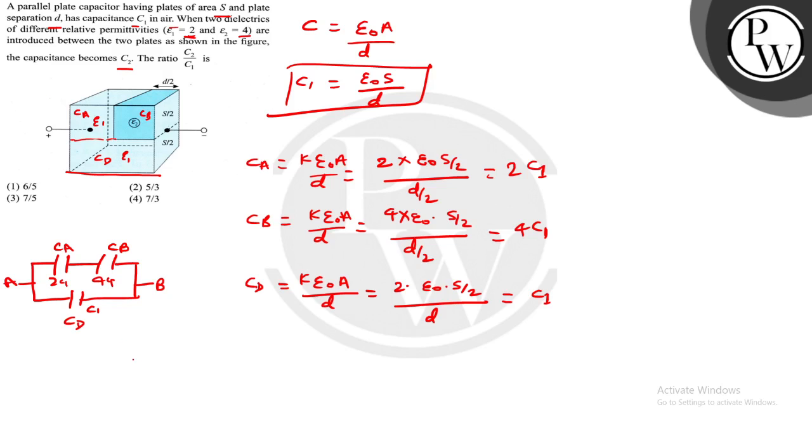CA and CB are in series. So this is 2C1 times 4C1 divided by 6C1. This will be my equivalent capacitance.